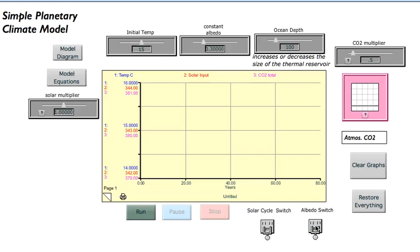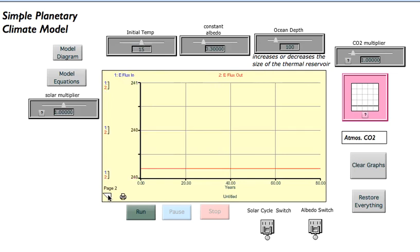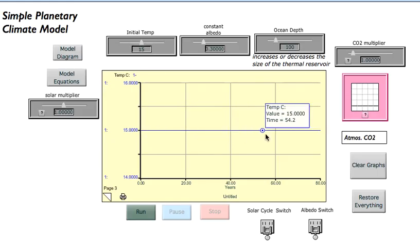Let me show you a few things. If we restore everything to the way it was when you first open the model and run it, you see on page one of this graph pad, everything is constant all the way across. CO2, solar input, and temperature stay the same.